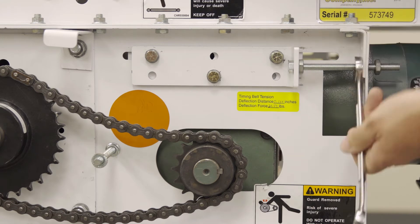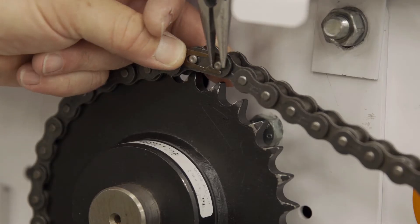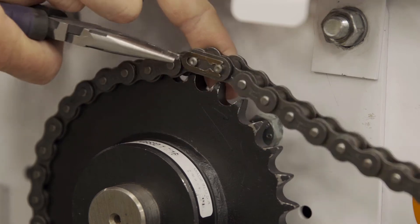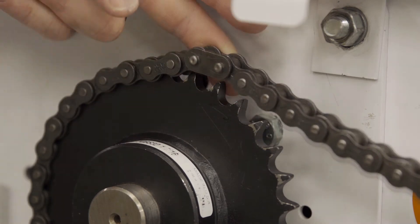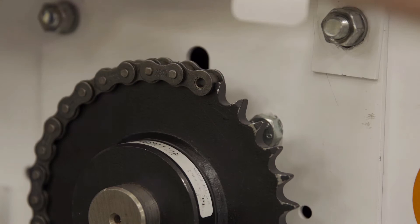Now the old chain is loose enough to remove. Find the master link on the drive chain and remove the outer clip using the needle nose pliers. Remove and discard the old master link and chain.